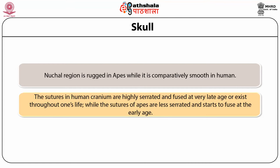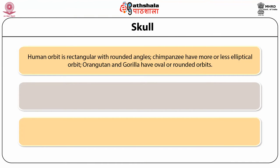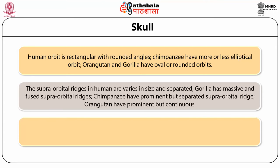The sutures in human craniums are highly serrated and fuse at a very late age or persist throughout one's life, while the sutures of apes are less serrated and start to fuse at an early age. The shape of the orbit in humans is rectangular with rounded angles, but chimpanzees have a more elliptical orbit while orangutans and gorillas have an oval or rounded orbit. The supraorbital ridges in humans are varied in size and separated, but gorillas have massive and huge supraorbital ridges.